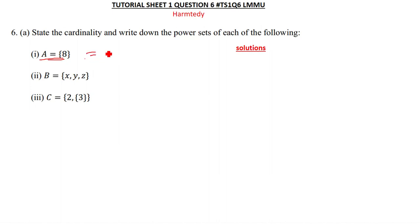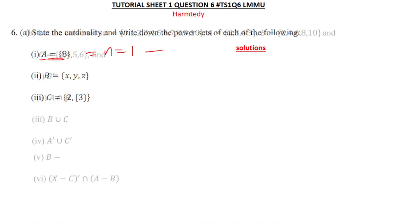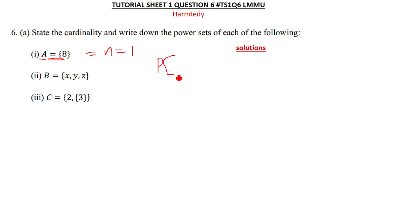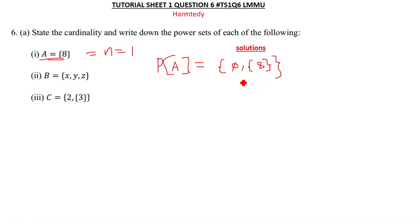The cardinality of set A is one, so n = 1. The power set of A contains two elements: the empty set, and the set itself which is {8}. So P(A) = { {}, {8} }.